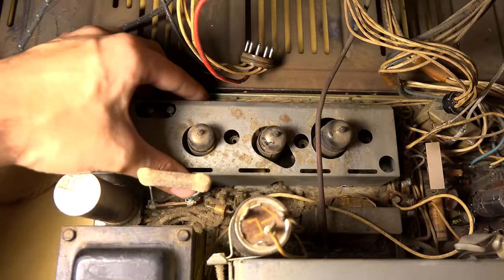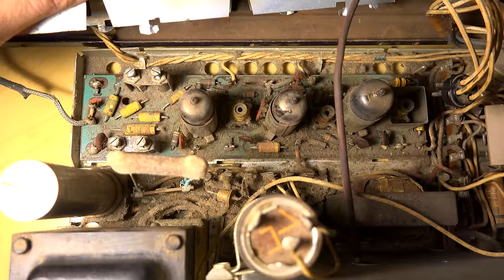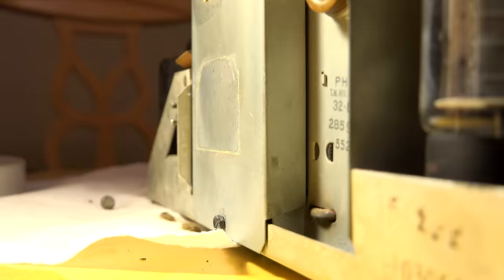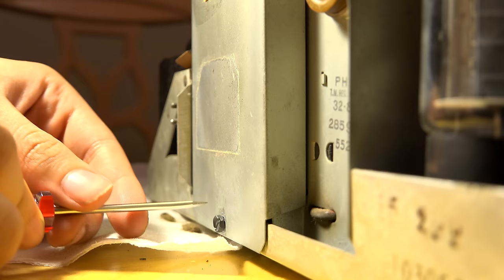Now don't get me wrong, this thing is absolutely disgusting. Here's what the IF board looked like under the shield. If it wasn't for the edges, you couldn't even tell that was a green circuit board. I wouldn't be surprised if somebody chain-smoked straight in this thing for 50 years.